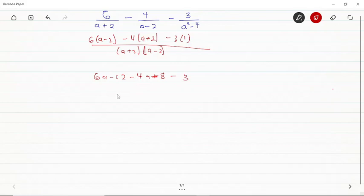Let's group the like terms on the numerator. 6a minus 4a is going to give us 2a. Now, minus 12 minus 8 is going to give us minus 20. Minus 20 minus 3 is going to give us minus 23.